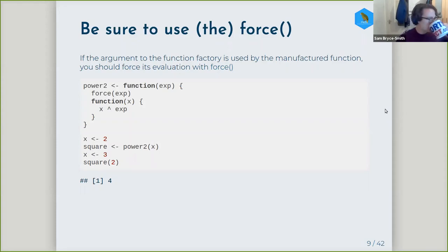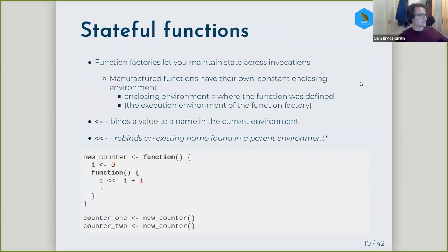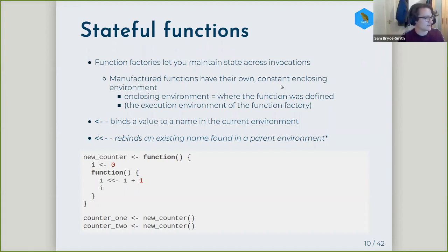This is the following section in the chapter. The term seemed a little elusive to me, but essentially it's what we've seen with square and power — each manufactured function maintains state between calls, which is the binding in the case of power_one: the value bound to the exponent. This happens because these manufactured functions have their own constant enclosing environment — the environment where the function was defined, which is inside the function factory. Because the function factory produces a new environment every time it's called, each manufactured function will have its own unique environment.